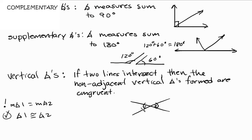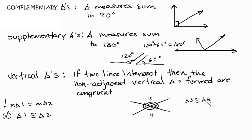Looking at these vertical angles — angle one and angle two — there are also another pair: angle three and angle four. To sum up the vertical angle explanation, angle three is congruent to angle four, and angle one is congruent to angle two. I hope this tutorial helped, and good luck with your homework and tests. Thank you for watching.